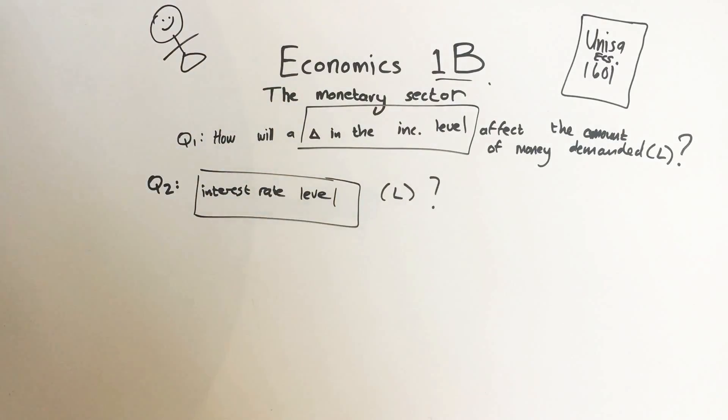Hello guys, welcome back to Economics 1B, the monetary sector. I'm Ellie and I want to discuss two exam questions with you. The first exam question is: How will a change (remember that triangle means change) in the income level affect the amount of money demanded?